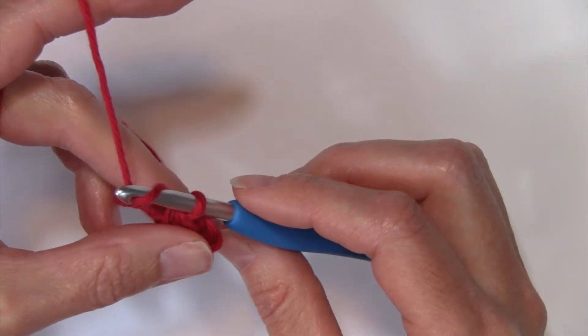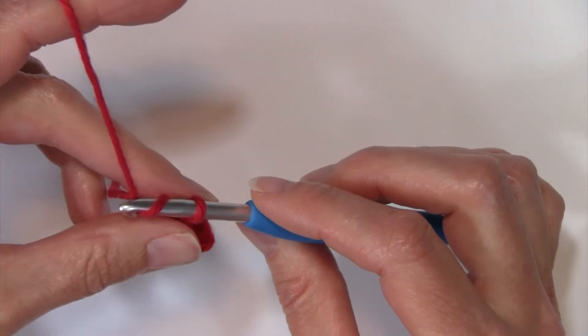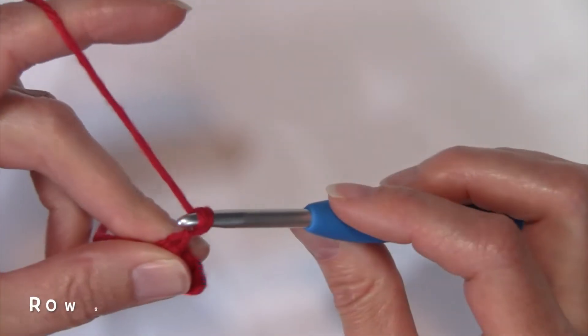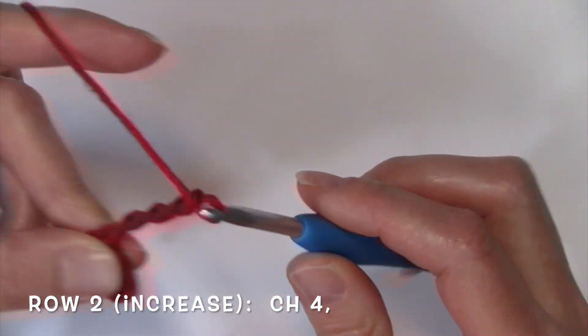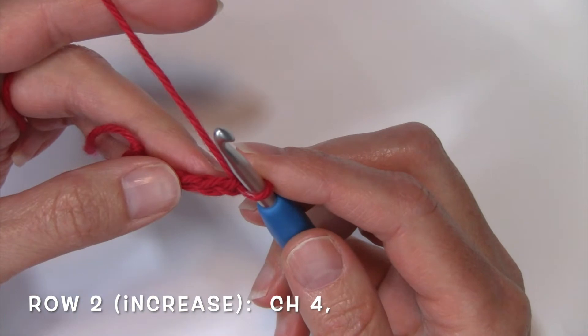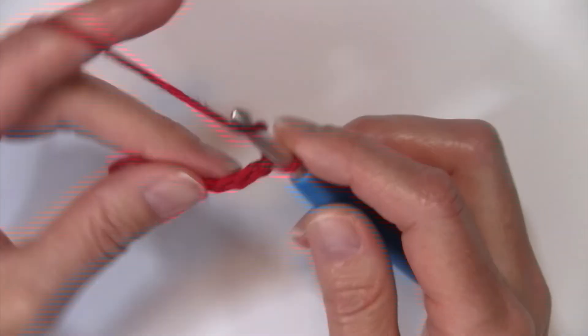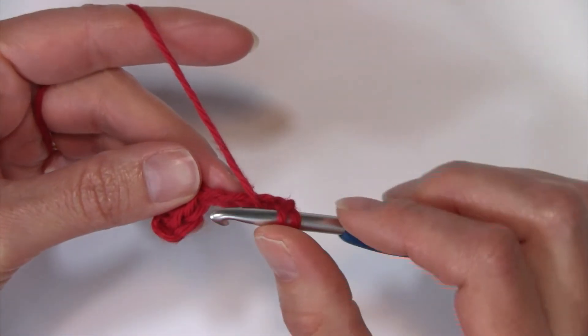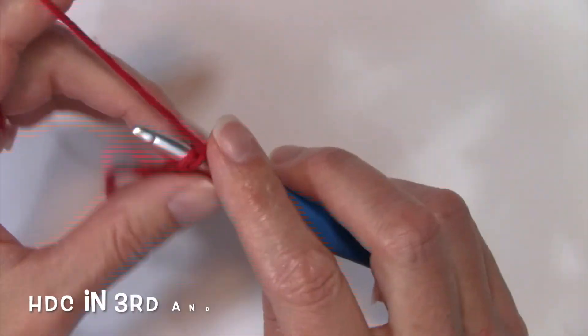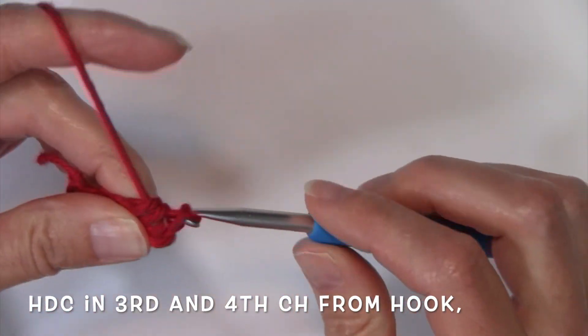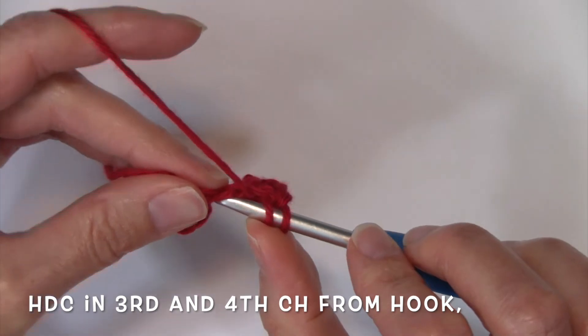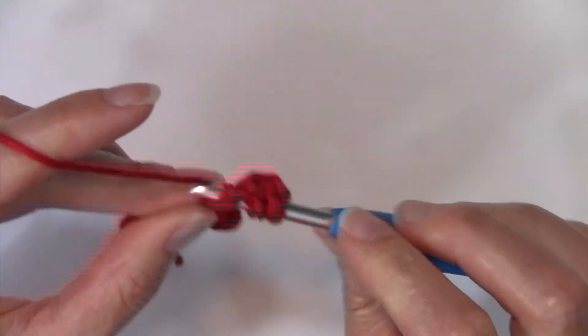Now we're going to work on our second row by chaining four again. One, two, three and four. And we're going to work again those two half double crochets to make a block, working the first one in that third chain from the hook and our last one in the last chain from the hook.